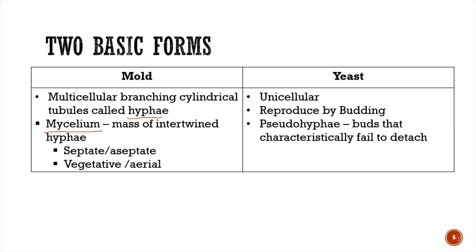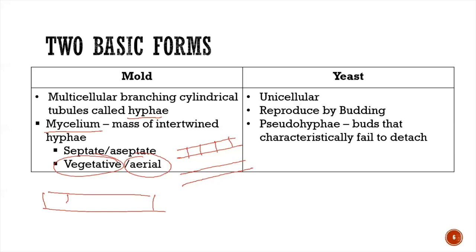Hyphae could either be septate or aseptate. Septate hyphae have partitions or septa which are almost regularly spaced, whereas aseptate hyphae will not have septa. Hyphae can also be classified as vegetative or aerial. Vegetative hyphae are responsible for absorbing nutrients — like the roots of trees — while aerial hyphae are protruding and bear the reproductive apparatus of the fungi, like spores.